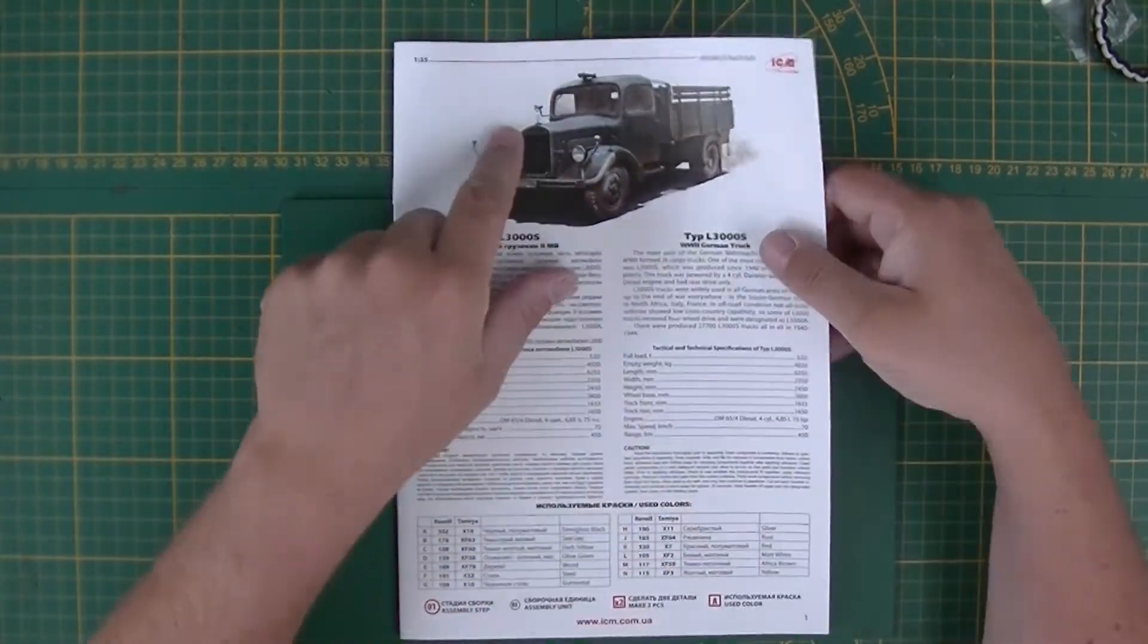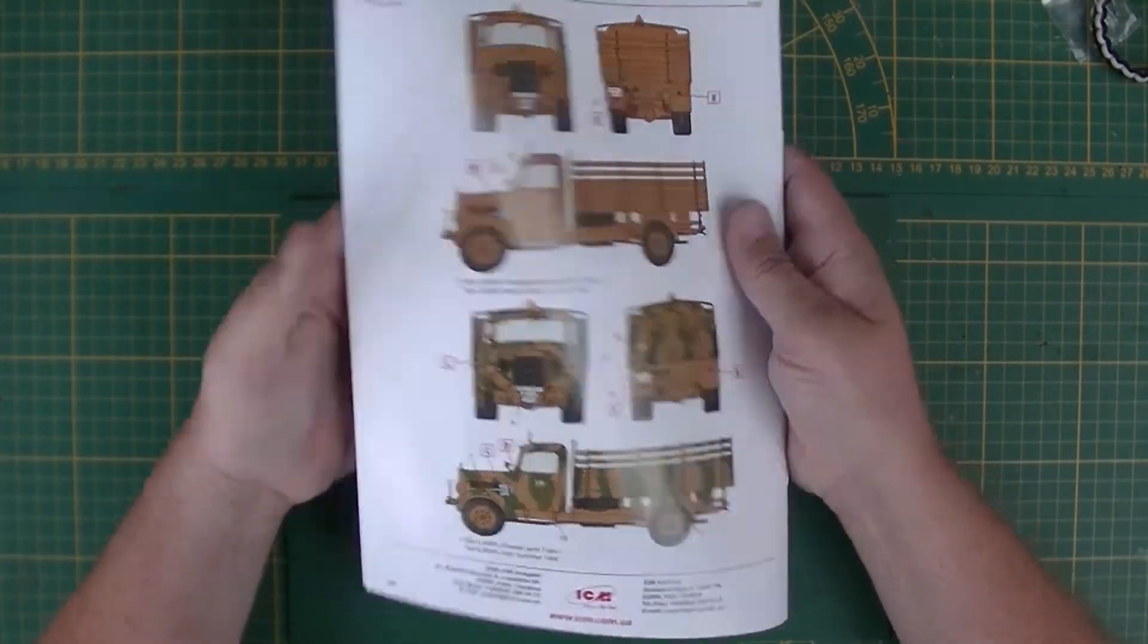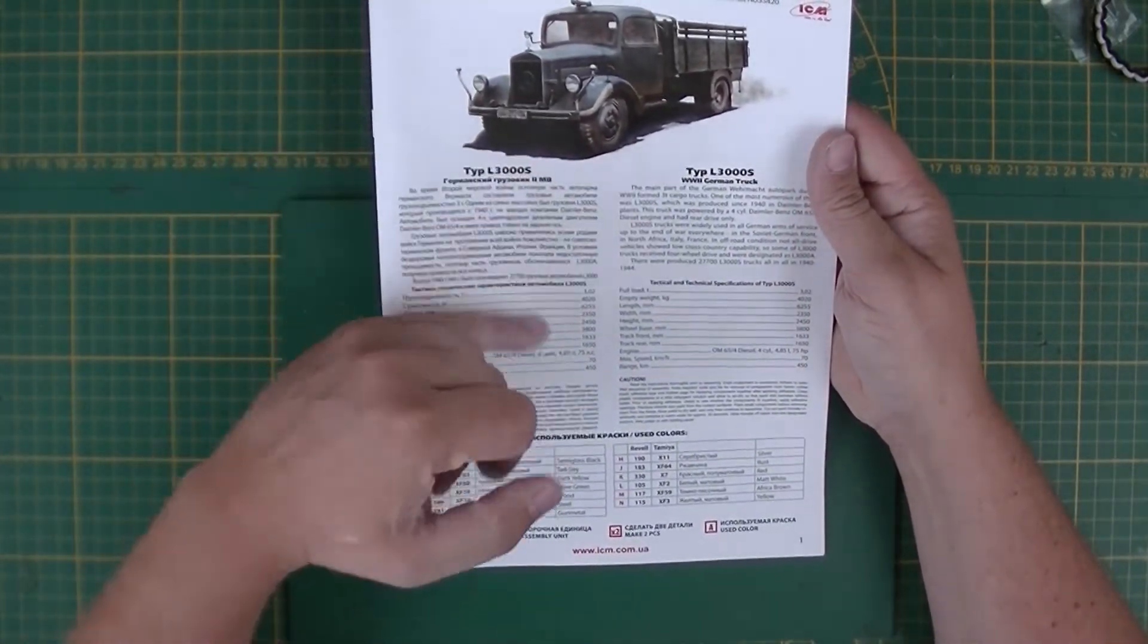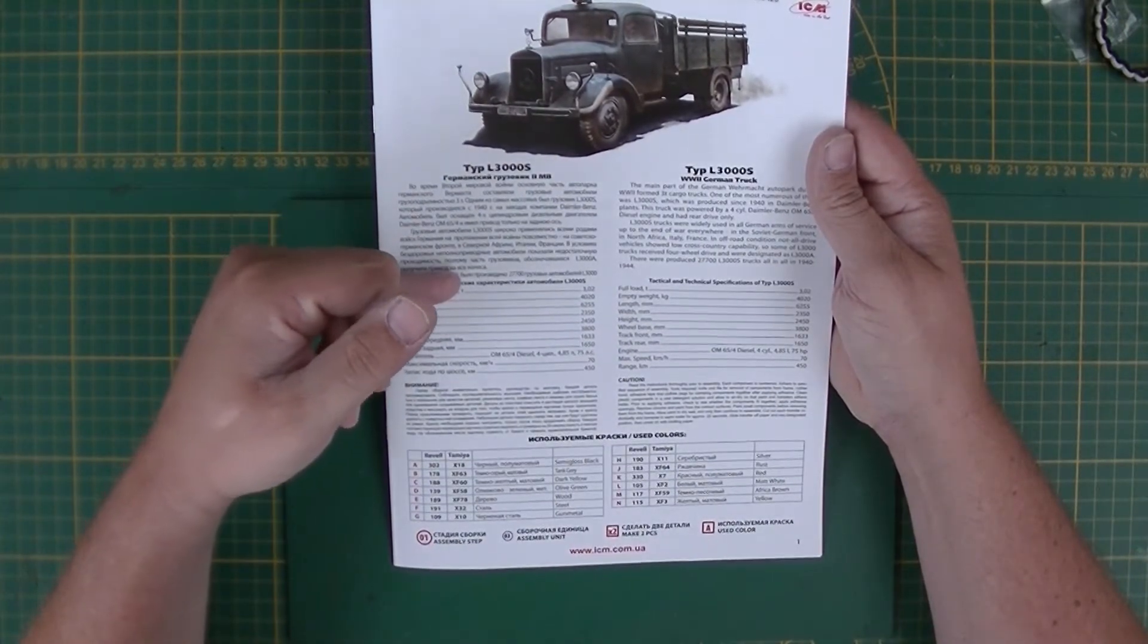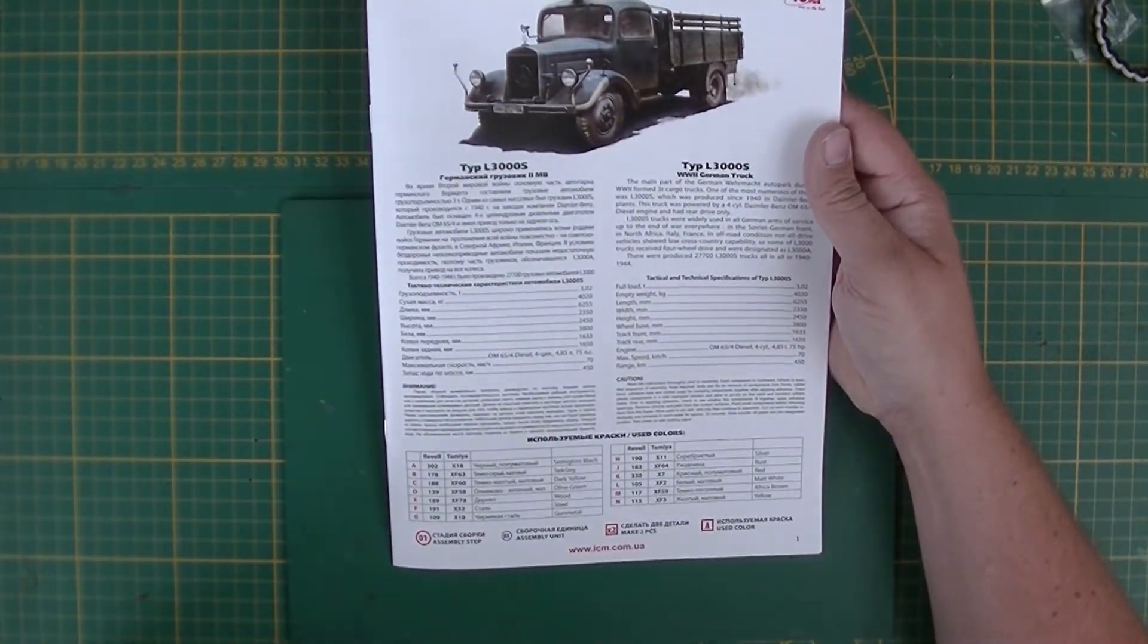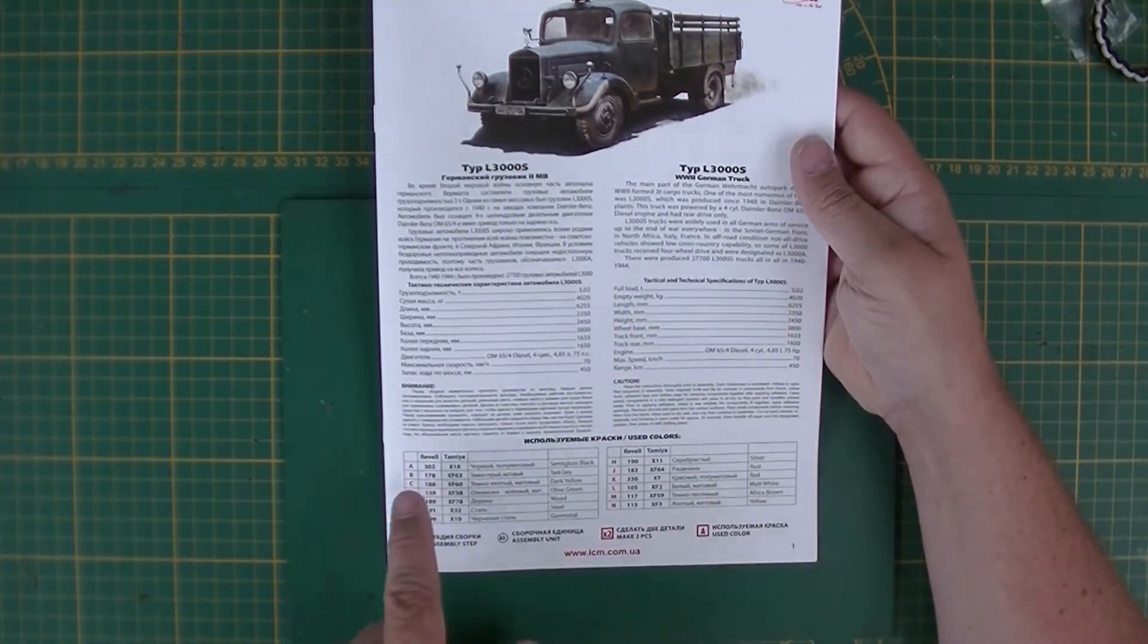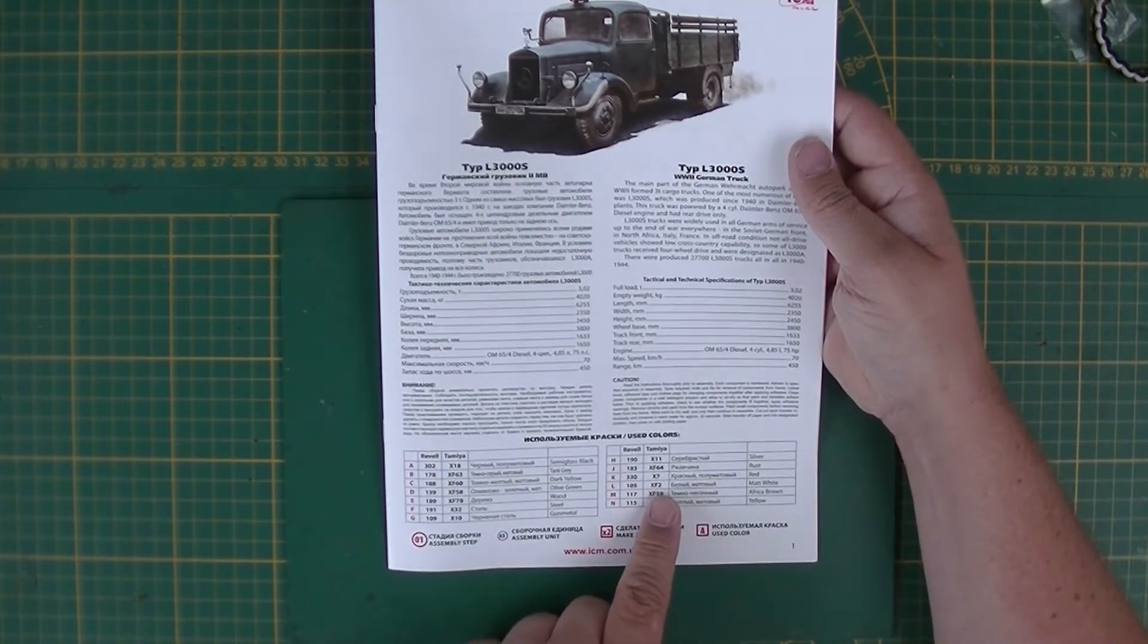I'm going to go to the instructions sheet first. A booklet, glossy paper in color. Color callout is also in color so that's already a plus. Write up about the vehicle in Russian or Ukrainian and in English, together with the technical specifications. And the paint callouts are in Revell and in Tamiya, that's something new as well.